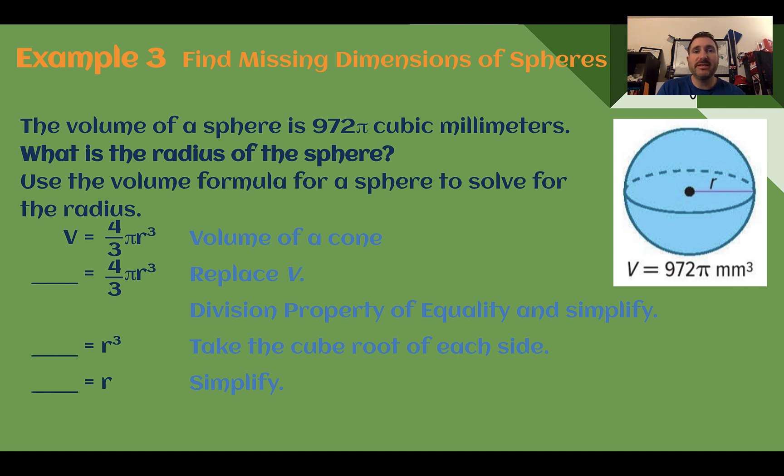Example 3. Find missing dimensions of spheres. The volume of a sphere is 972π cubic millimeters. What is the radius of the sphere? So if we're finding a missing dimension in a sphere it has to be the radius since there's only that if you're given the volume. Our volume formula for a sphere was four thirds pi times the radius cubed. We're told the volume is 972π.